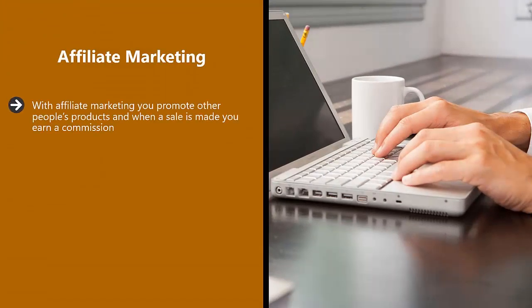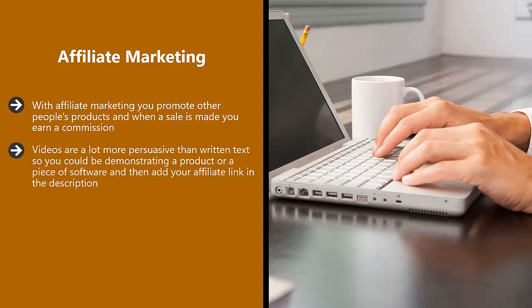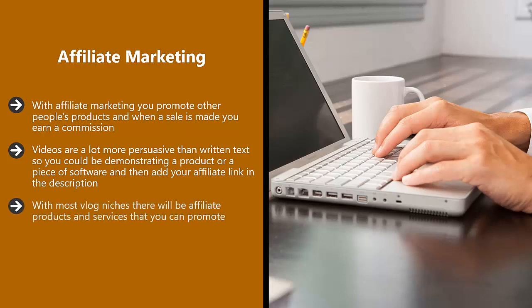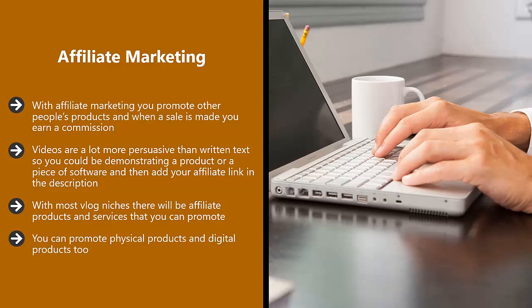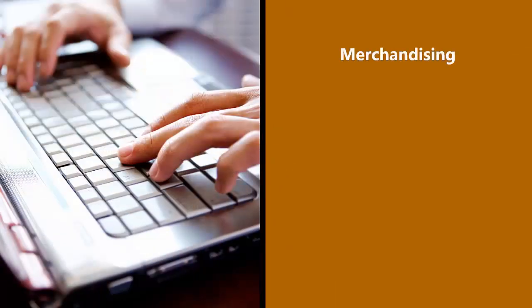Affiliate marketing: With affiliate marketing you promote other people's products, and when a sale is made you earn a commission. Commissions range from very small — a few cents — to very large — hundreds of dollars for high-ticket items. Videos are a lot more persuasive than written text, so you could demonstrate a product or piece of software and add your affiliate link in the description. To find affiliate programs, use Google and type in the product type followed by 'affiliate program,' for example 'makeup affiliate program.' You can promote both physical and digital products; digital products normally have higher commissions but can be harder to sell.